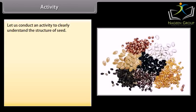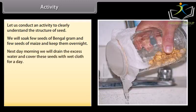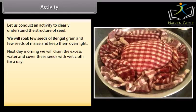Activity. Let us conduct an activity to clearly understand the structure of seed. We will soak few seeds of Bengal gram and few seeds of maize and keep them overnight. Next day morning we will drain the excess water and cover these seeds with wet cloth for a day.